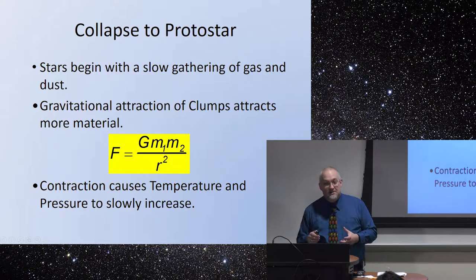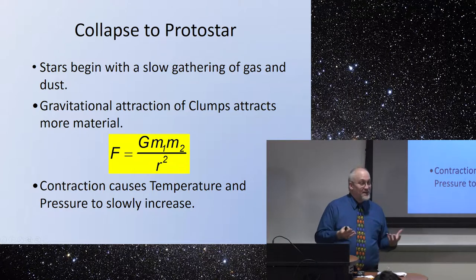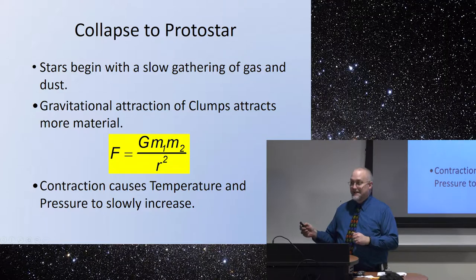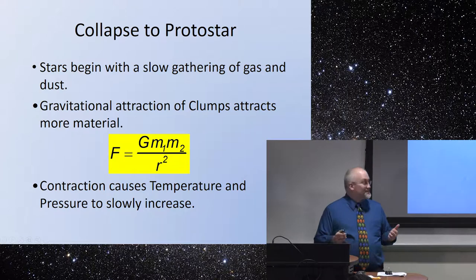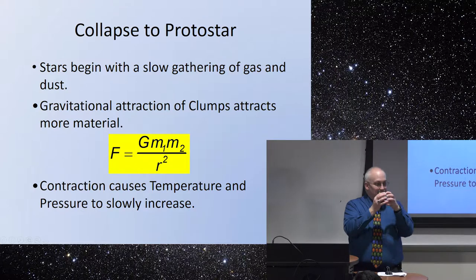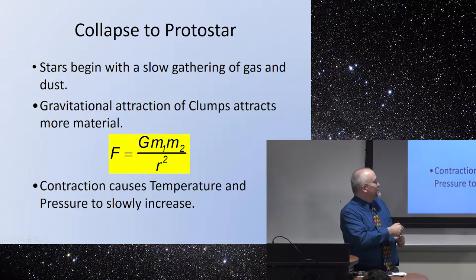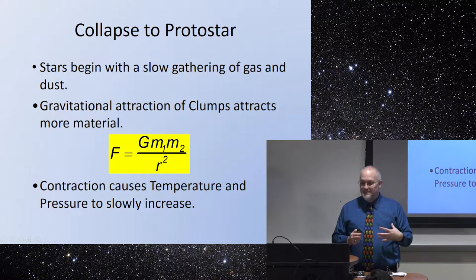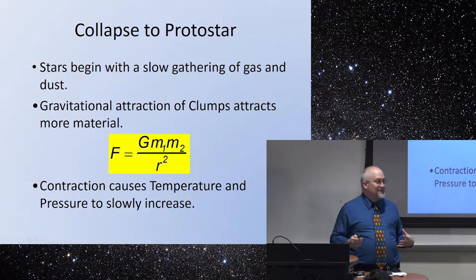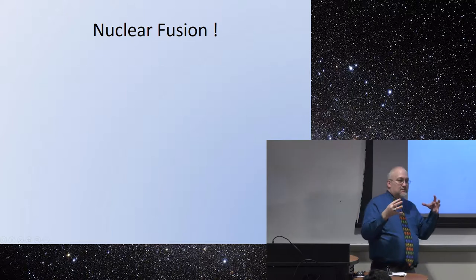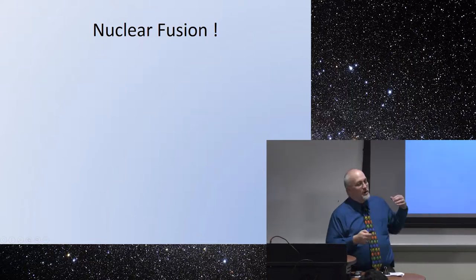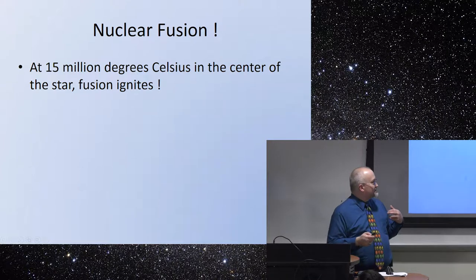Contractions do happen in stars — they actually do vibrate, and by looking at the vibrational rates we're able to determine more about the structure and internal processes. The more mass that clumps together, that raises one of the M's in the equation, which means the force gets bigger so it pulls in more stuff. The bigger it gets, the more it pulls in — it becomes the neighborhood bully and yanks in everything it can grab.